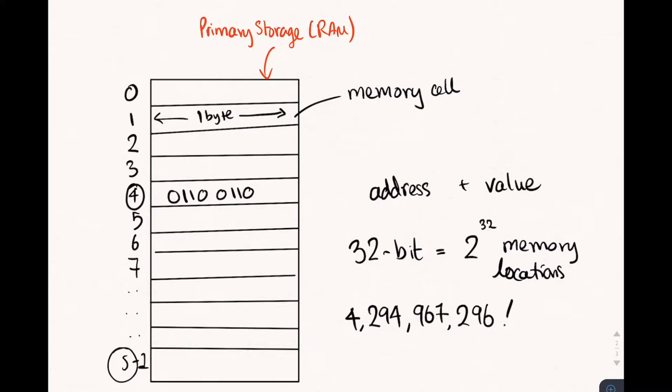That is a huge number of memory addresses to keep track of, and if we had to write our programs using the memory address of every location in memory where we wanted to store something, our programs would be very difficult to read. There'd be things like get the value from cell 31,732 and store it in cell 4,601,794.